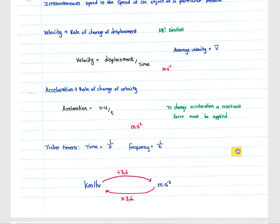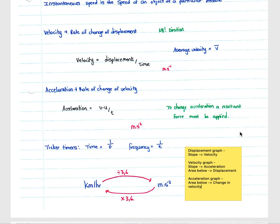Motion graphs are also very important in this section. With a displacement-time graph, the slope of the graph gives you the velocity of the object. With a velocity-time graph, the slope gives you acceleration and the area below the graph gives you displacement. With an acceleration-time graph, the area below the graph gives you the change in velocity from the beginning to the end point for that period.